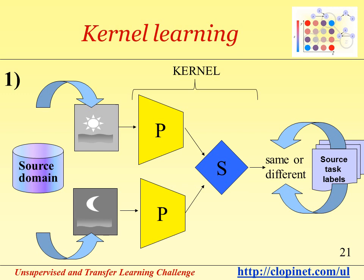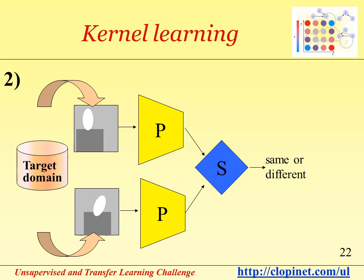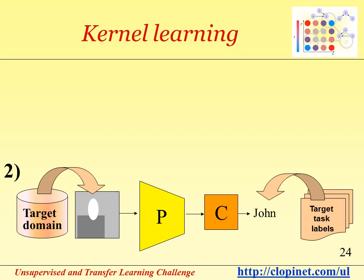The kernel is trained by inputting examples from the source domain and providing as output labels one if the inputs are from the same category or minus one if the inputs are from different categories. During training, the constraint is imposed that the two replicas of the preprocessor must remain identical. After training, you may use the learned kernel to make comparisons between examples in the target domain — for example, to perform nearest neighbor classification or to train another kernel method, including Parzen windows or support vector machines. Alternatively, you can rip out the preprocessor and use it to train a learning machine composed of a preprocessor and a classifier.